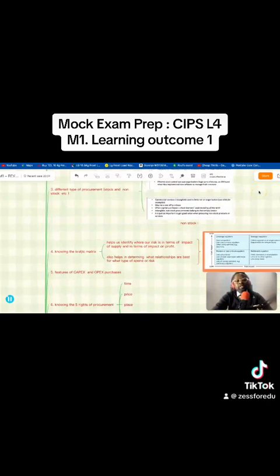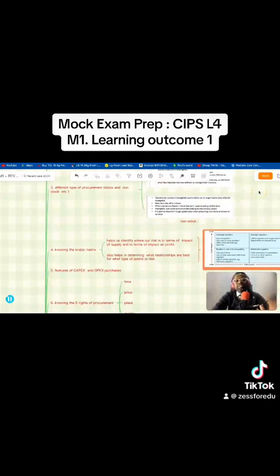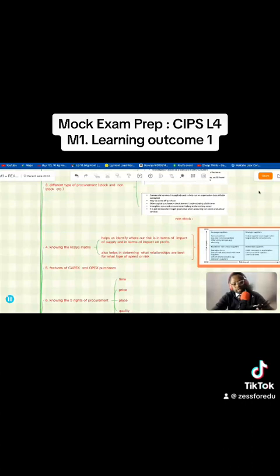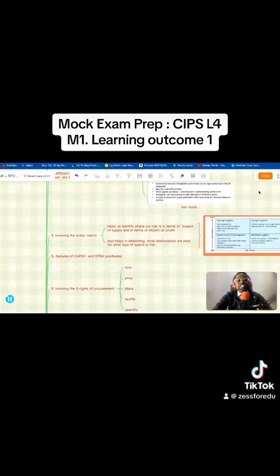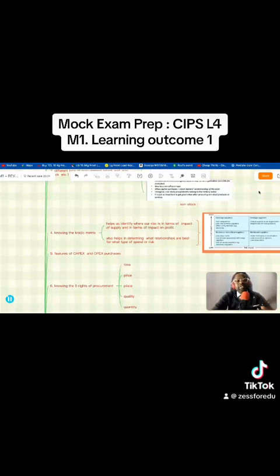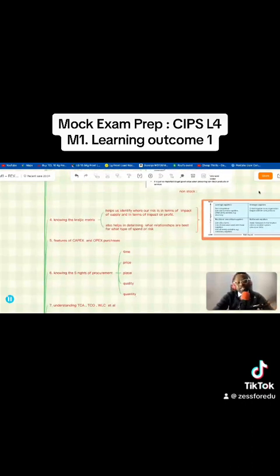Doing the Kraljic matrix - what is it all about? One of our favorite tools. Features of capex and operations expenditure, point number five.